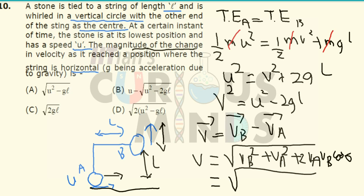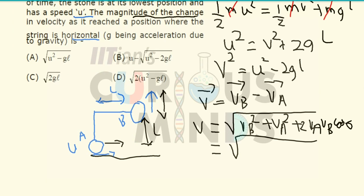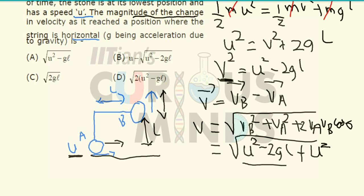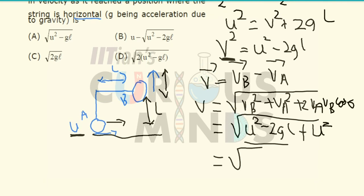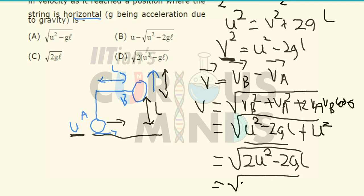Substituting, V_B squared equals U squared minus 2GL, and V_A squared equals U squared. Adding them gives the square root of 2U squared minus 2GL. Taking 2 as common, this becomes the square root of 2 times the quantity U squared minus GL, which corresponds to option D. So option D is the correct answer.